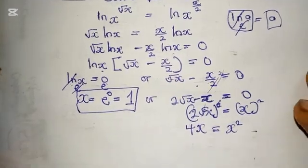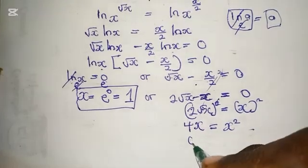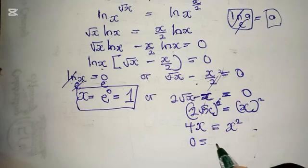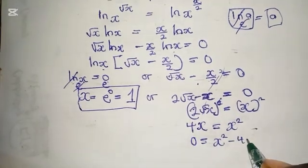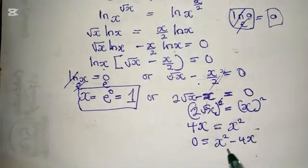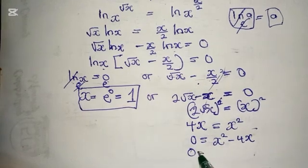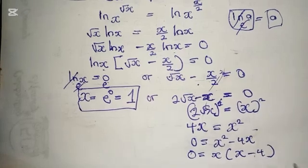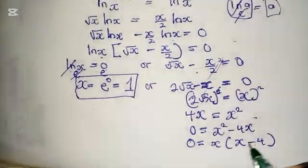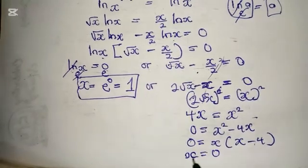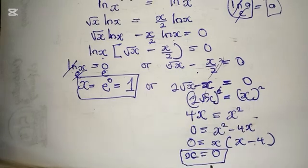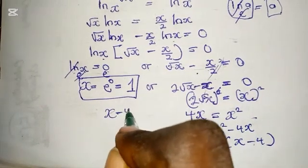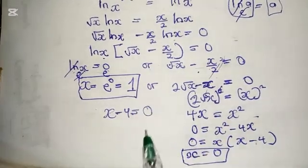Bring this to the right-hand side. So we have 0 equals x² minus 4x. x is common. We have 0 equals x(x minus 4), which implies that x equals 0, another solution for x, and also x minus 4 equals 0.